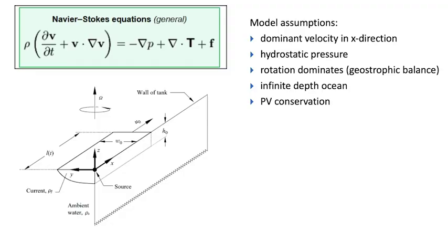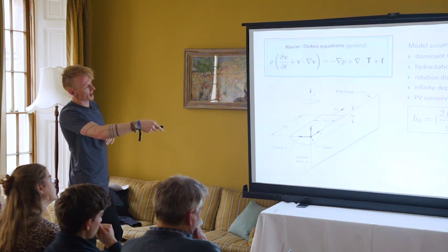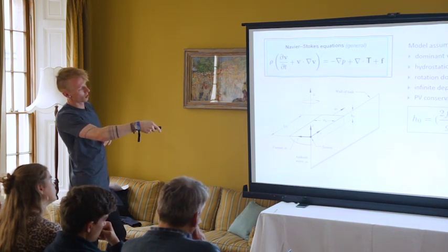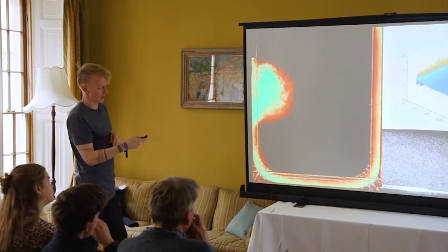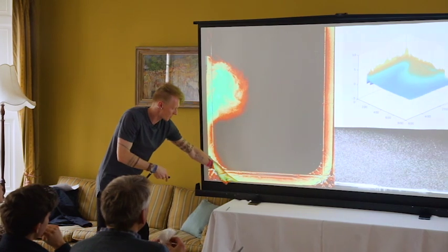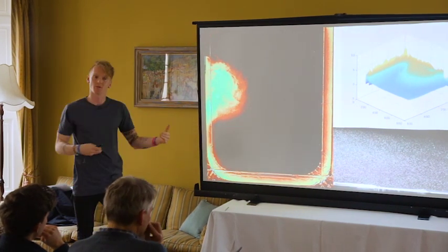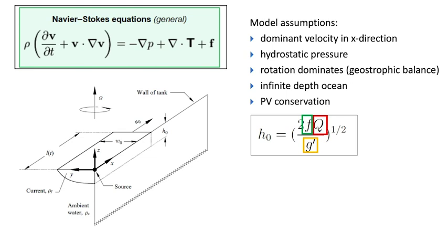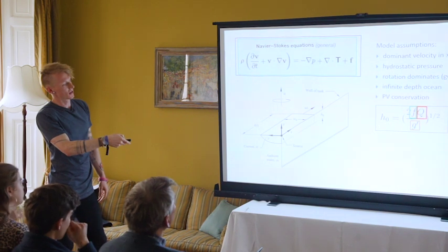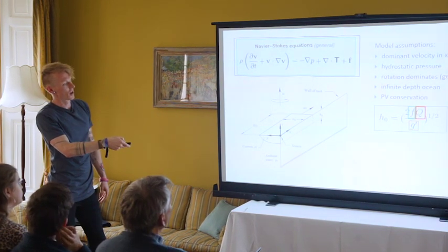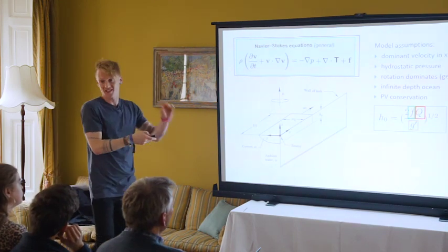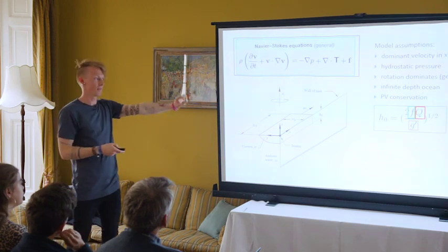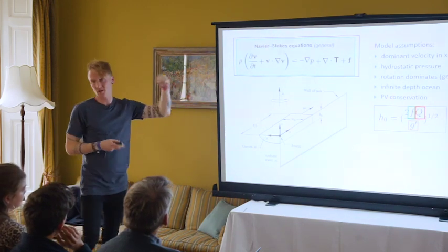With all those assumptions, what I end up with is a really nice formula for the current depth. My maximum current depth occurs along the wall, and I call it H0. The current is deepest next to the wall and then gets shallower as you move away from the coast. I have a measurement of how deep my river current is in terms of rotation rate f, volume flux Q, and density difference G'. That's it — a simple formula: plug those numbers in, go to a river, measure those three things, and this tells you how deep your river current is.